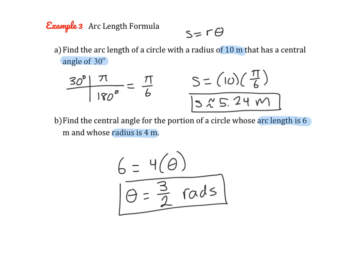For part B: find the central angle for the portion of the circle whose arc length is 6 and whose radius is 4 meters. Using the same formula but solving for a different part: 6 equals 4 times theta, so theta equals 3 over 2 radians. It's perfectly fine to leave your answer in radians.